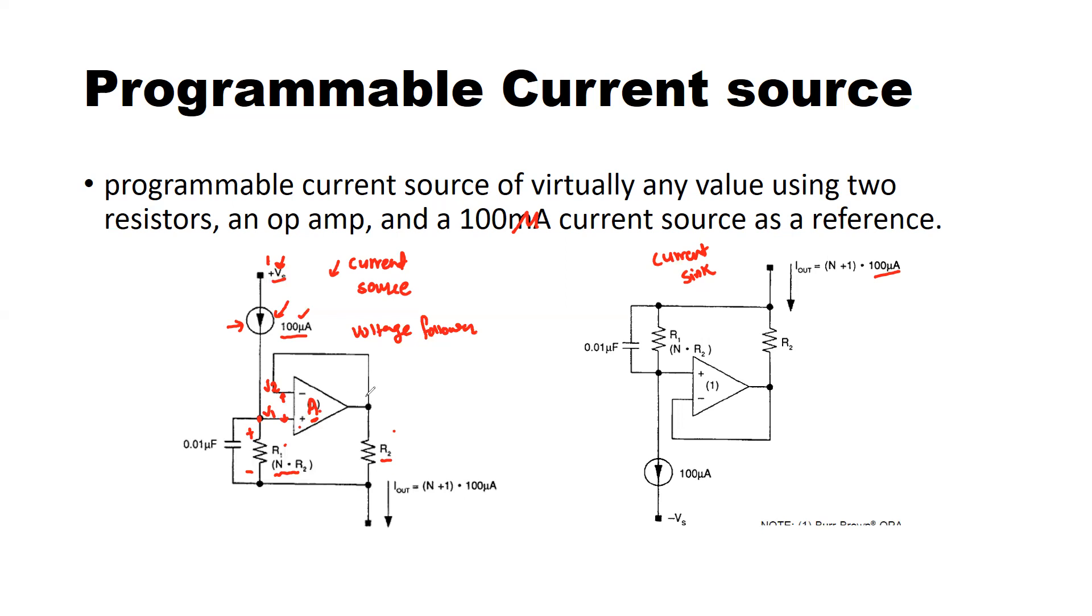Because of that action, this V1 appears here which is connected to the output. So output voltage is nothing but this V1 which is 100 microampere multiplied by R2 times N, the value of R1.